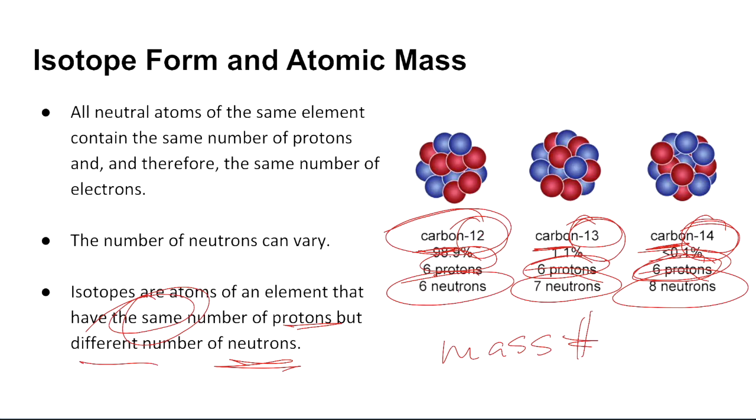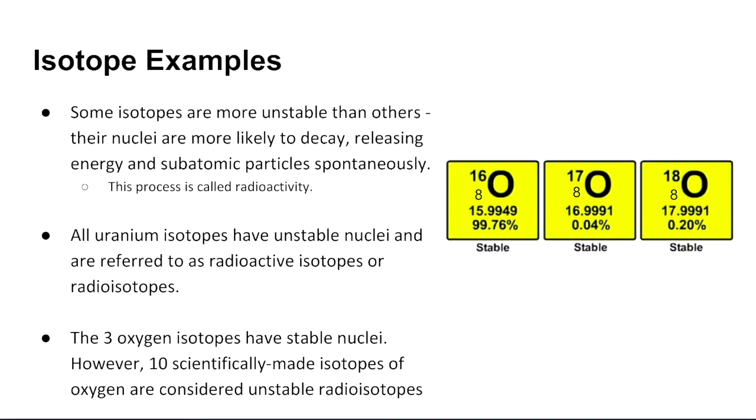When we write it as such, carbon-12, carbon-13, carbon-14, this is what is referred to as isotope form. Here's another example of some isotopes. Yes, we're going to talk a little more about isotopes in the next lesson, 2.2.